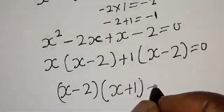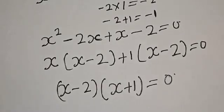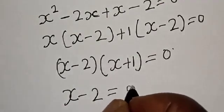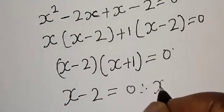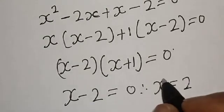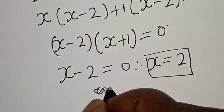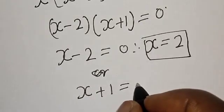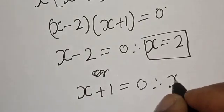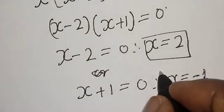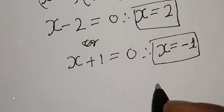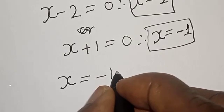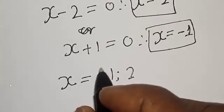So (s minus 2)(s plus 1) is equal to 0. Therefore s minus 2 equals 0, giving s is equal to 2, or s plus 1 equals 0, giving s is equal to minus 1. Our final answer is s equals minus 1 or s equals 2.